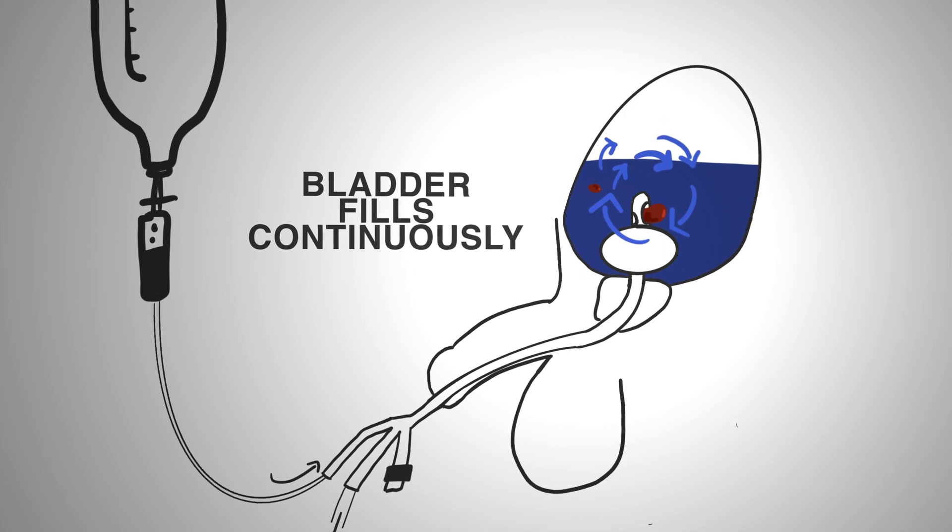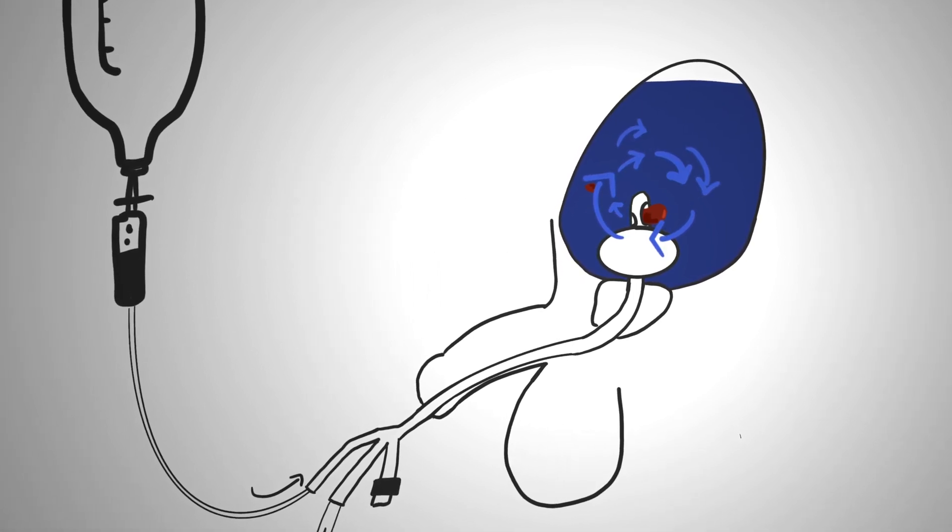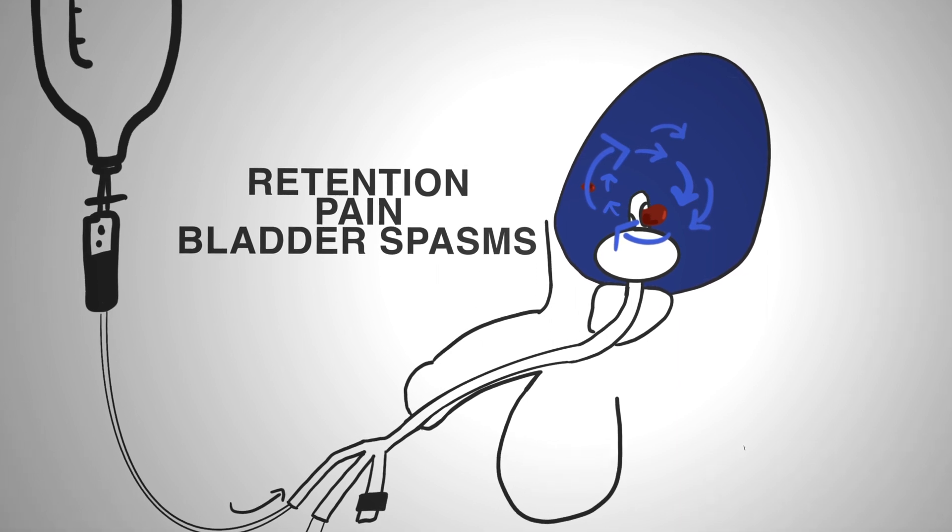If the patient is elderly, frail, or has a history of radiation, it's even possible that you can rupture the bladder with continuous irrigation alone.